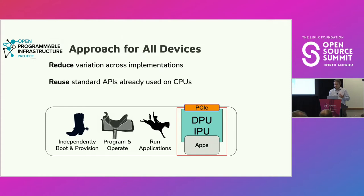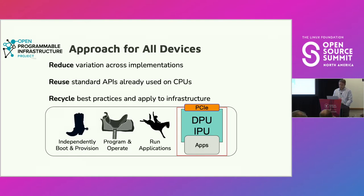We also want to reuse things we already have on the CPU that we know work. I mentioned Open vSwitch — there's lots of network virtualization work we want to reuse, APIs we already use. We want to make sure Kubernetes can run, that we can do the same things we're doing with service mesh. All of these things we expect to run on a CPU should also be able to run on an IPU or DPU. And we want to recycle best practices for security, power management, and lifecycle management — being able to put these new devices into your fleet and manage them as a whole.